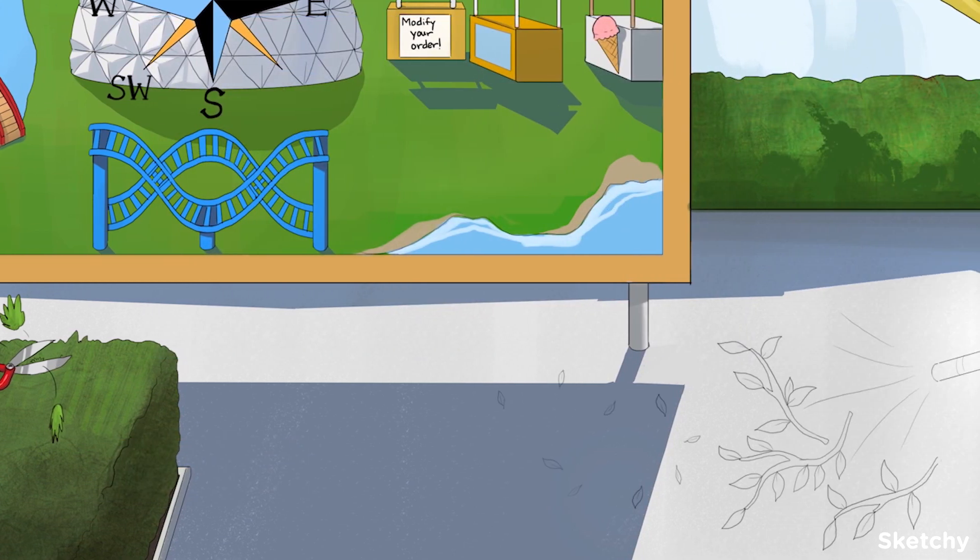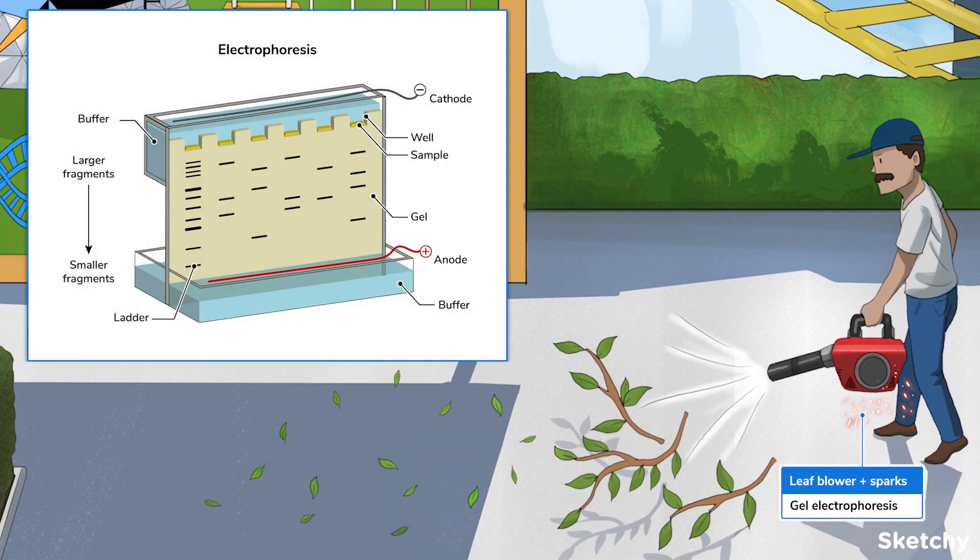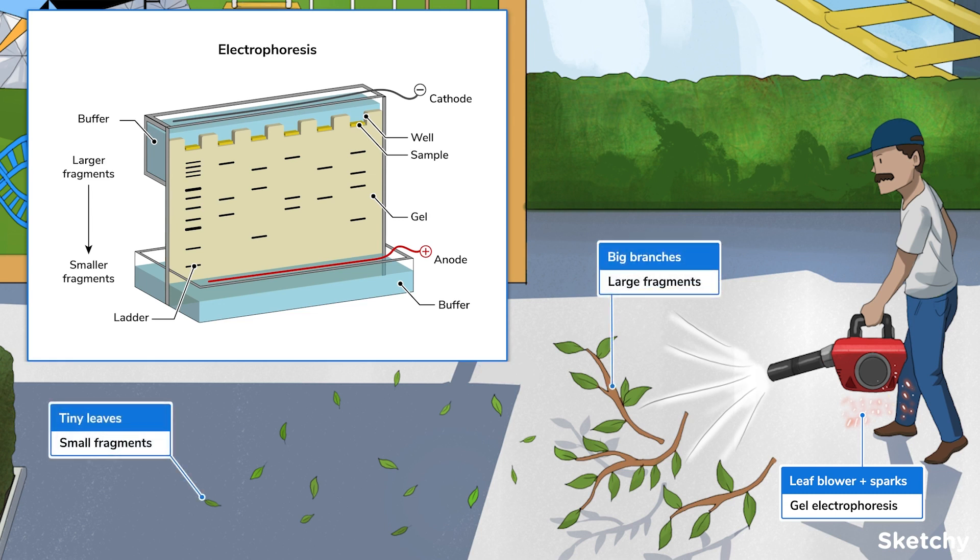Next, the pieces of DNA are separated by gel electrophoresis. Without diving too much into the details, the pieces are loaded into wells at one end. An electric current is then applied to move the pieces across the gel. The gel has pores that function like a sieve. Smaller DNA molecules travel through the gel faster than the large ones, kinda like how this leaf blower moves the small leaves further away than the big branches.